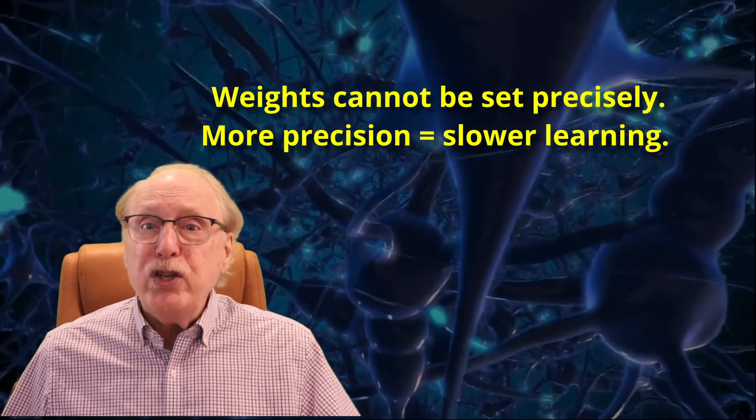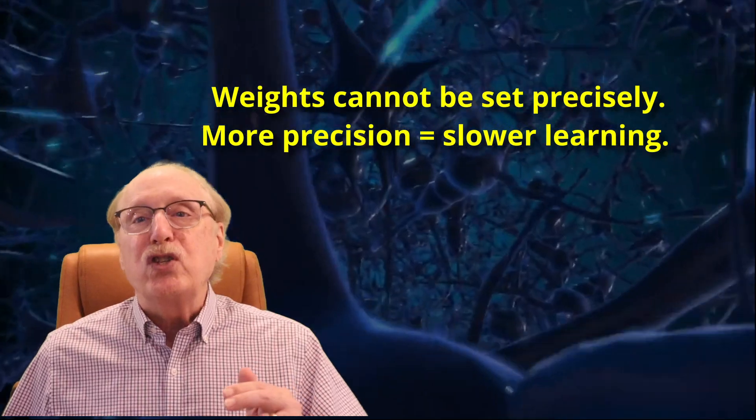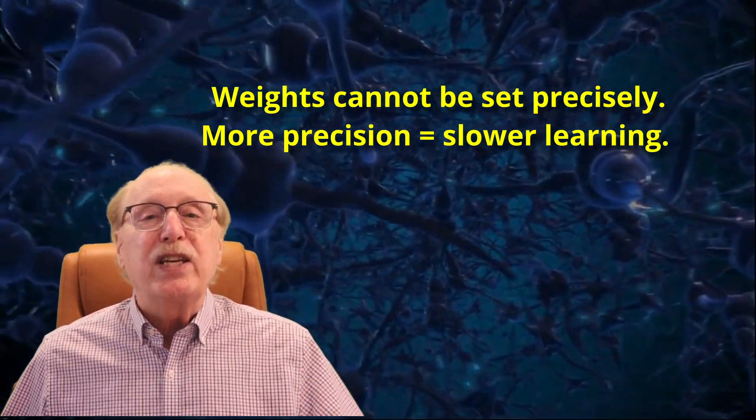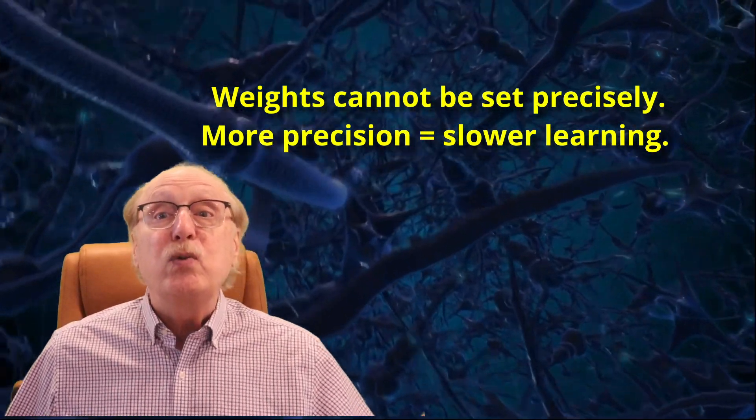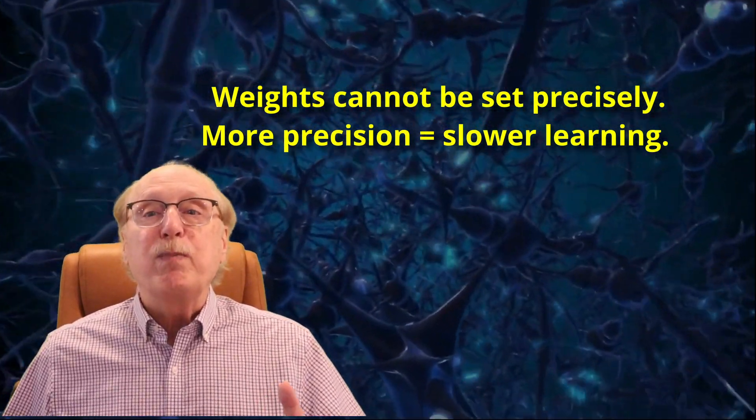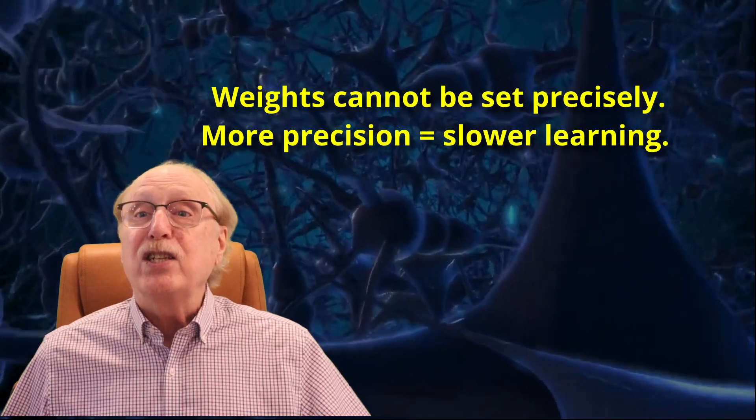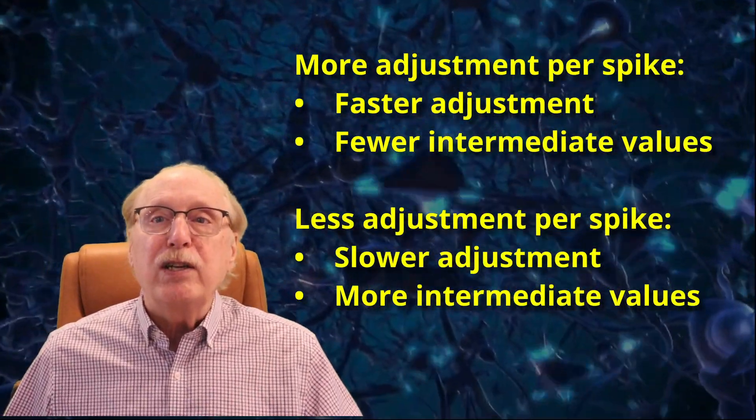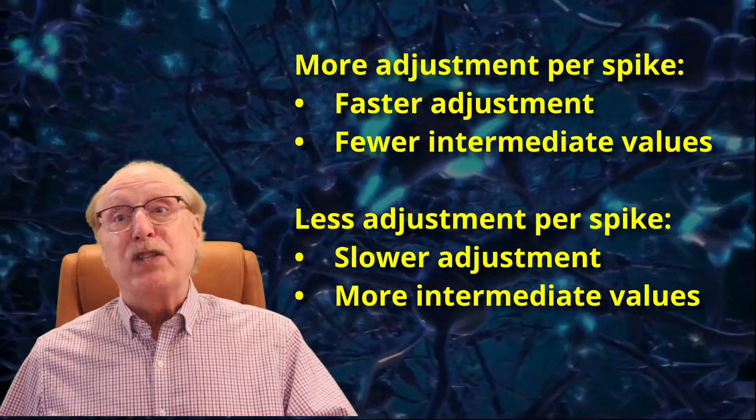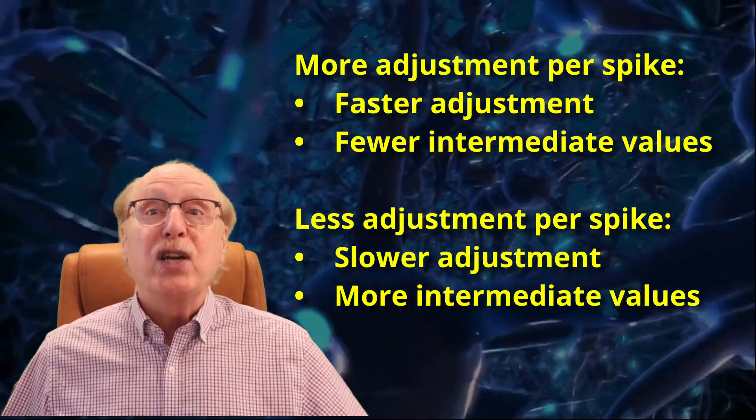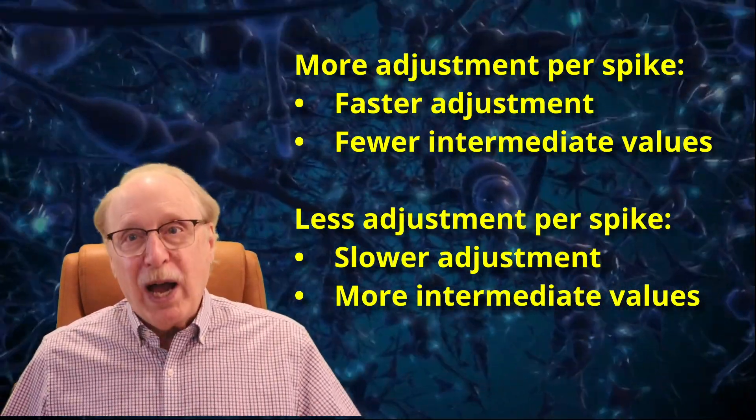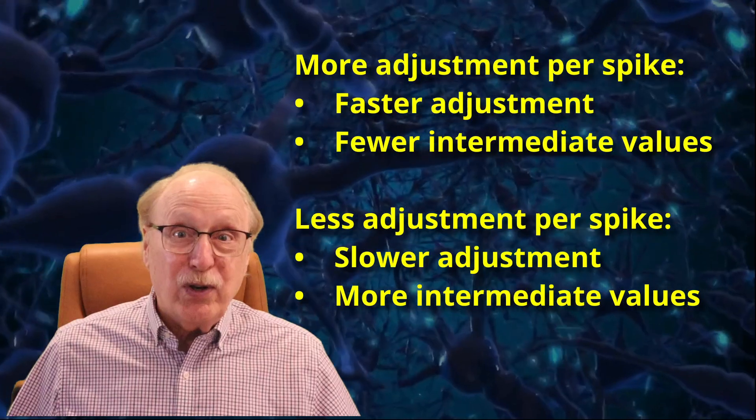Further, the more precision you want in synapse values, the slower the learning will be. If you need to strengthen a synapse from its minimum value to its maximum, you should expect it to take multiple spikes in the best of circumstances. This is fine, but creates a clear trade-off between the number of distinct weights a synapse can have and the time it takes to set that weight. So higher precision means slower learning.